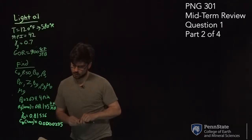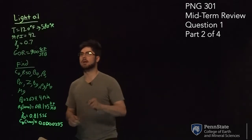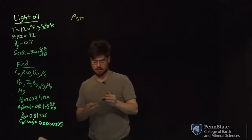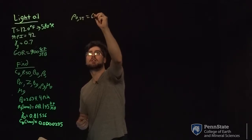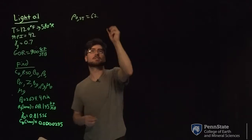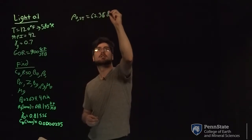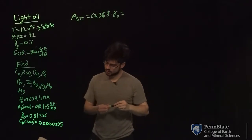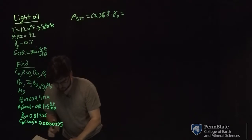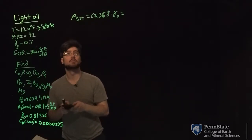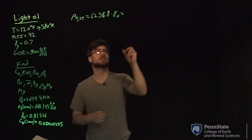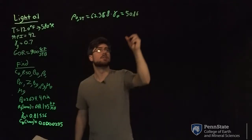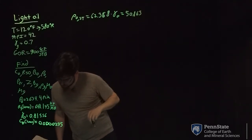First, we're going to find the density of your dead oil. If you define the density of a dead oil, your rho at standard conditions is going to equal 62.368 times your specific gravity of your oil. In this case, our specific gravity of oil is 0.81556, which gives us a density of 50.865 pounds per cubic foot.